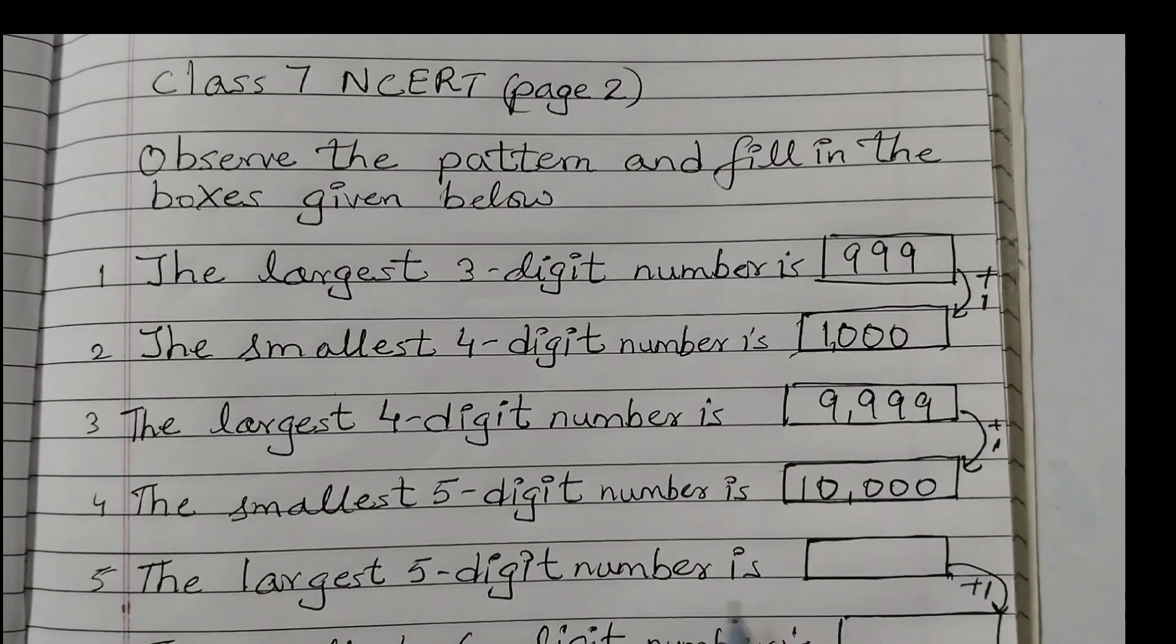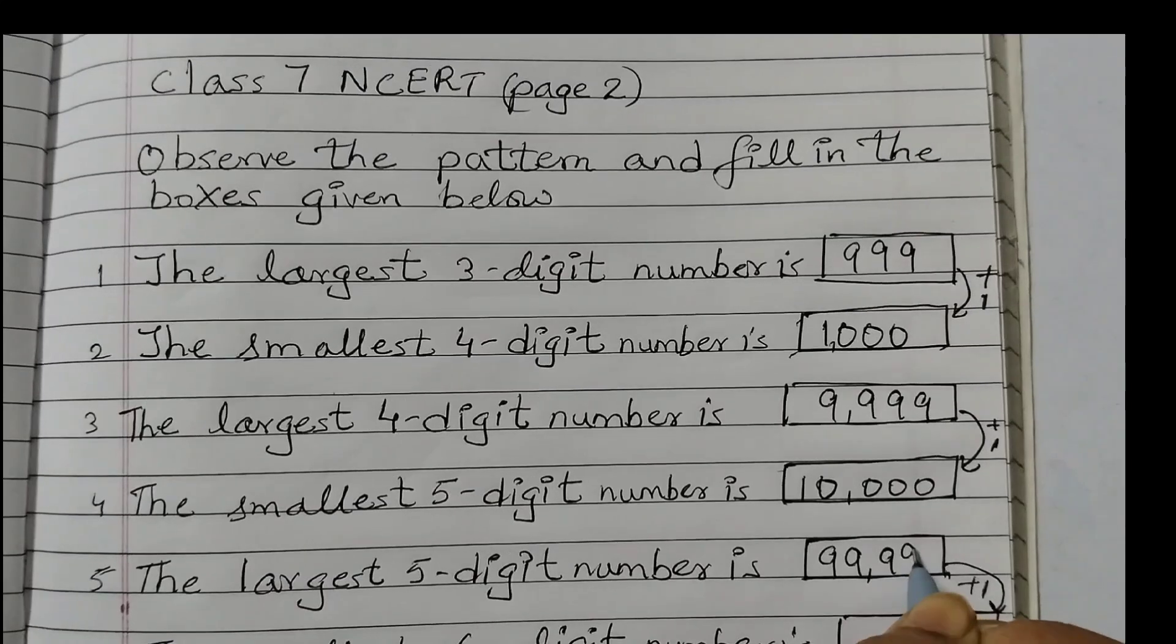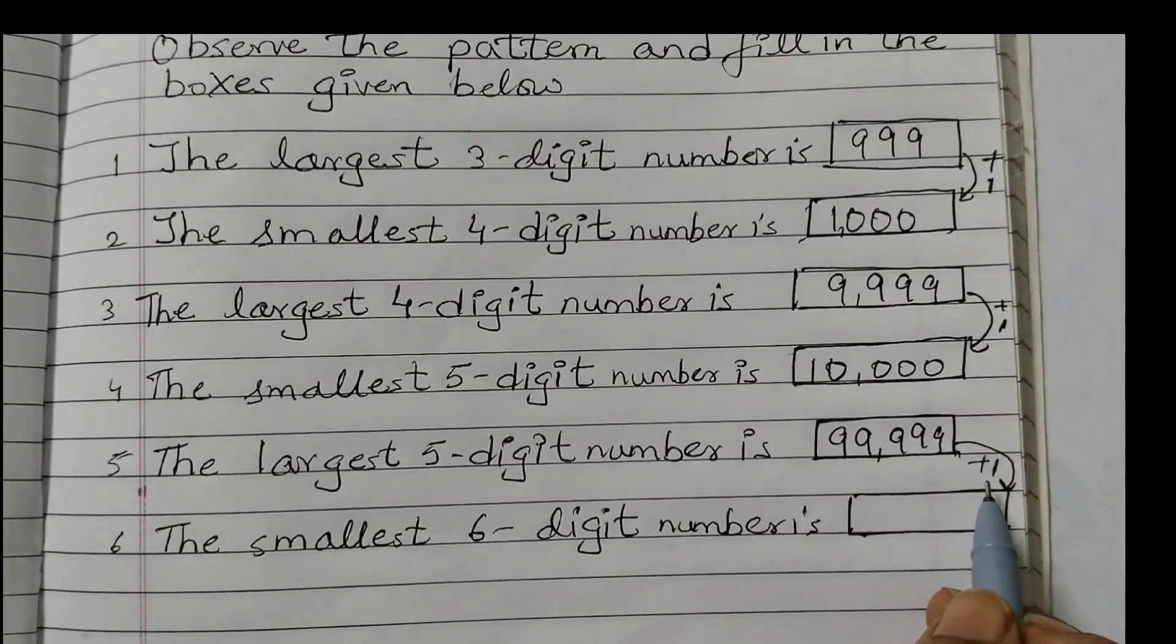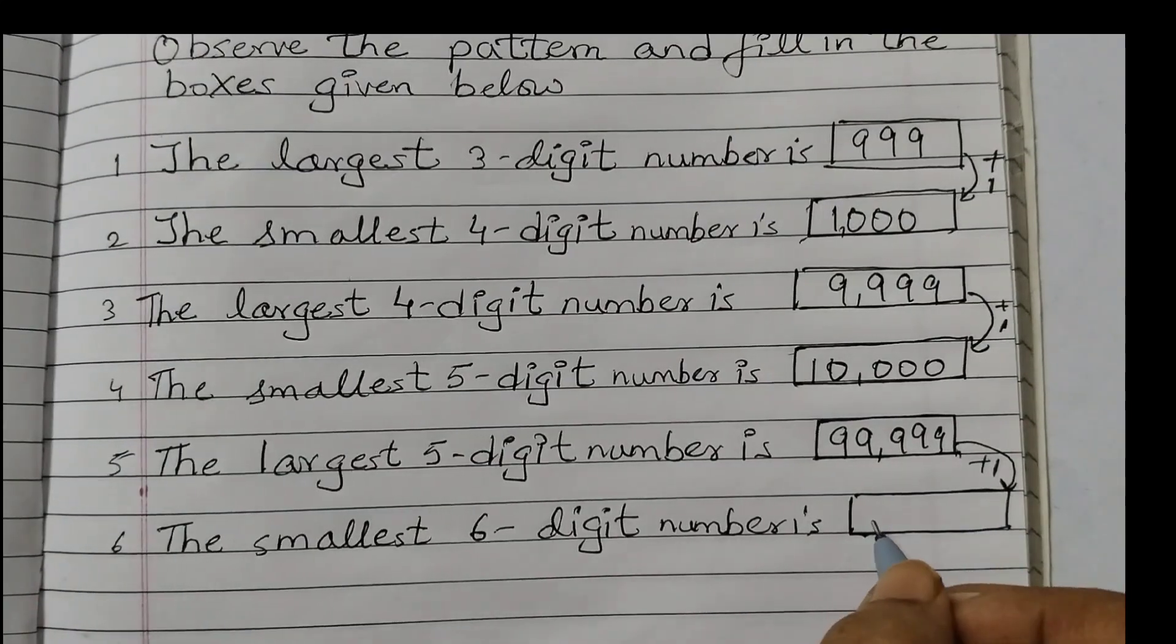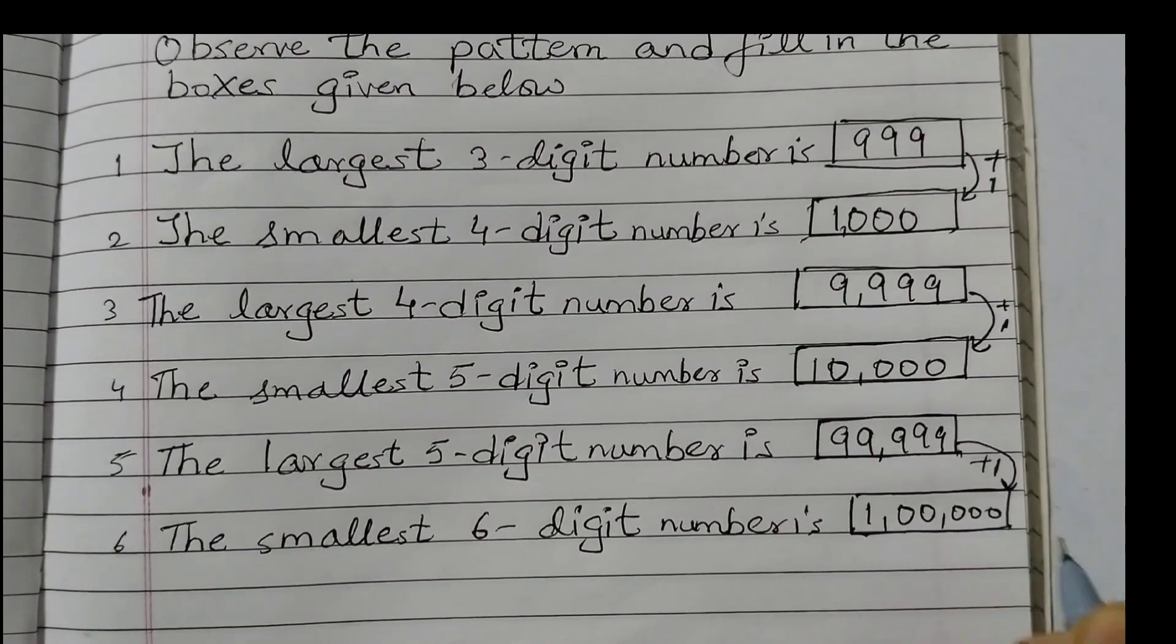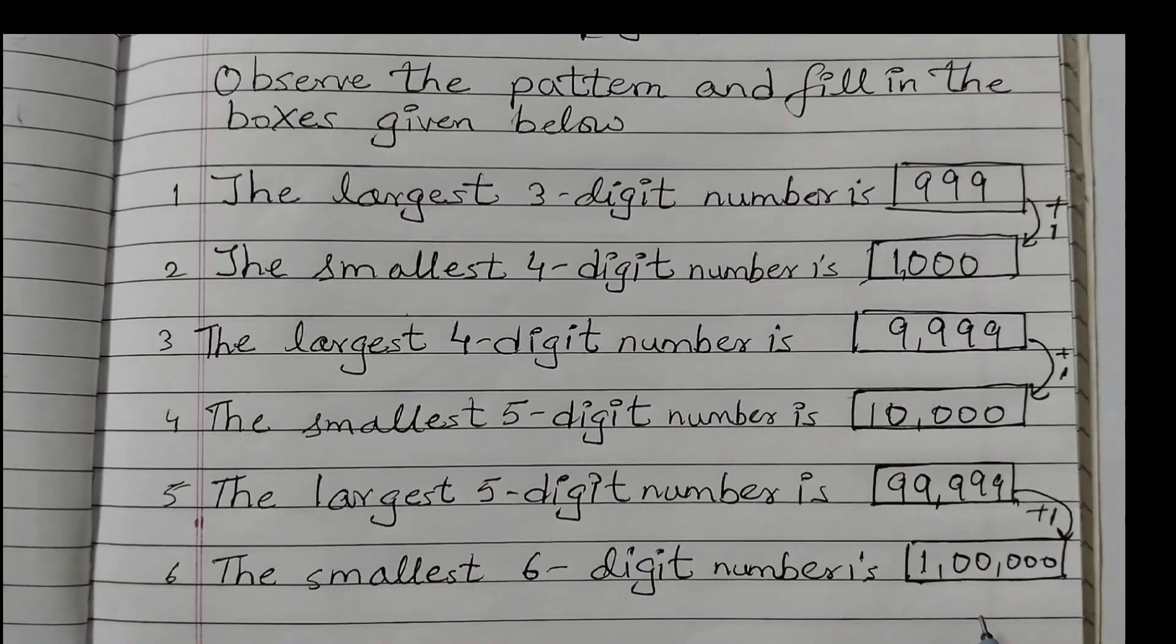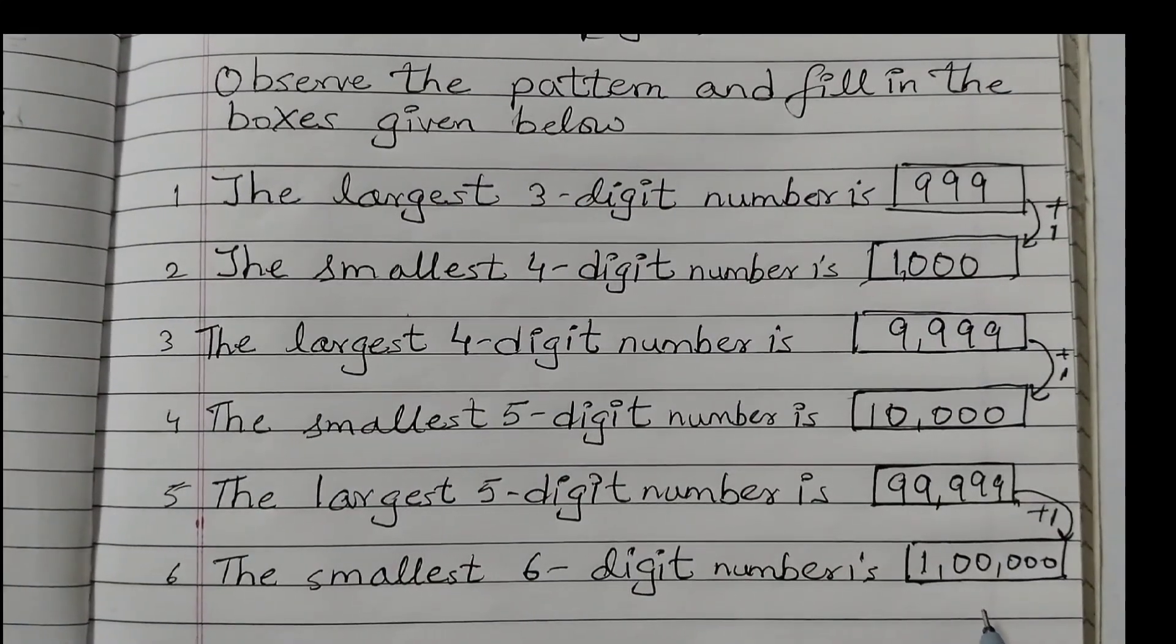The largest 5 digit number is 99999. Now we will add 1 to this. And when you add 1, you would get 1, 0, 0, 0, 0. So it's 1, 2, 3, 4, 5, 6. So this is the smallest 6 digit number.